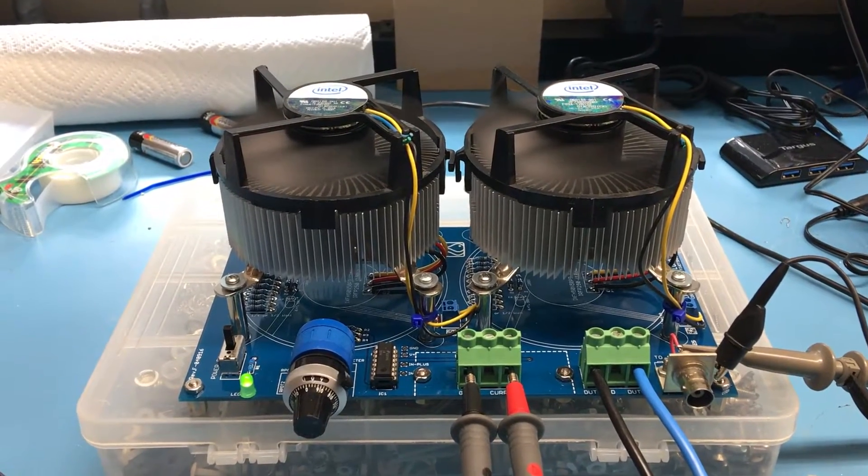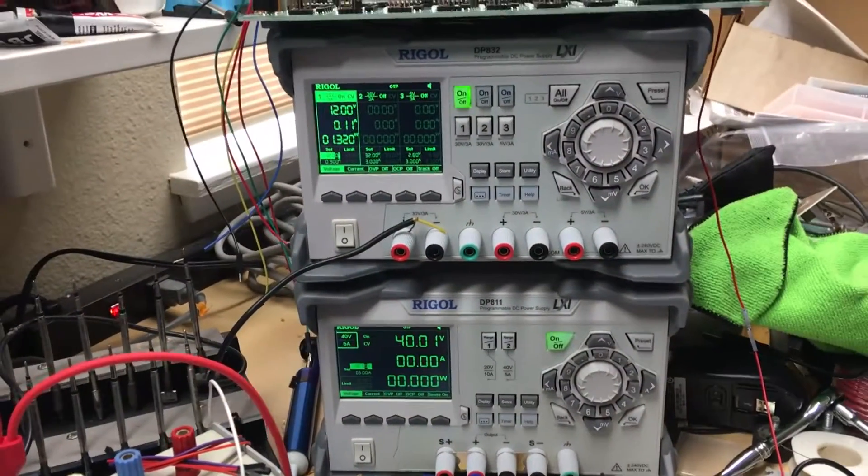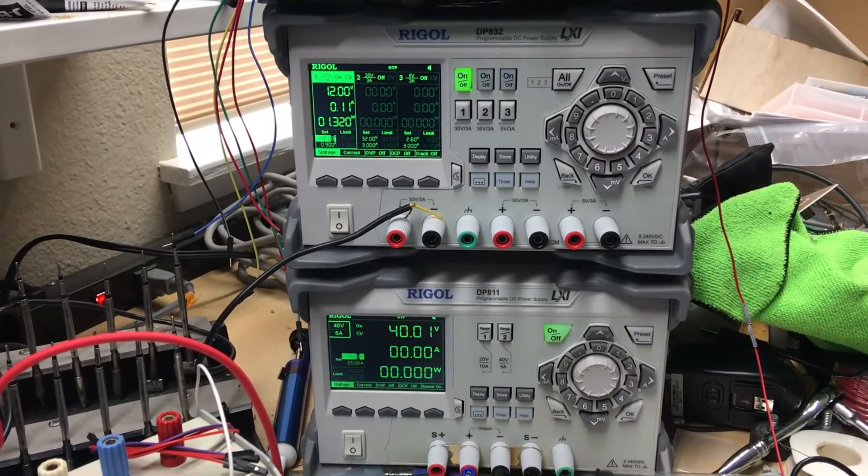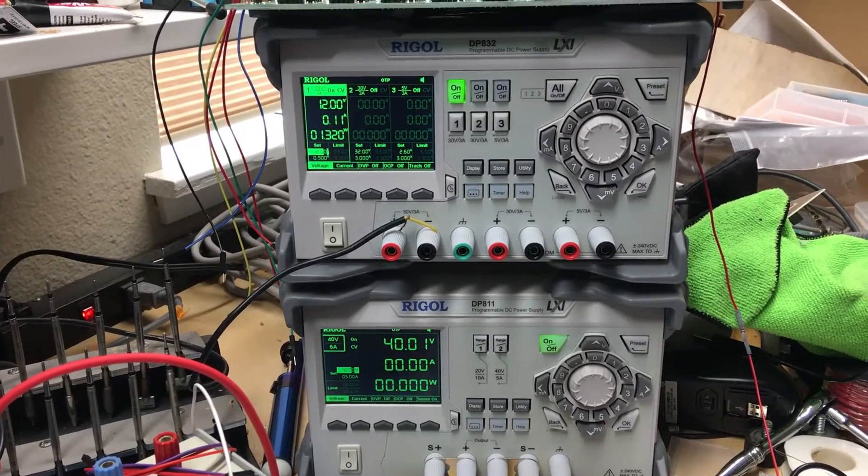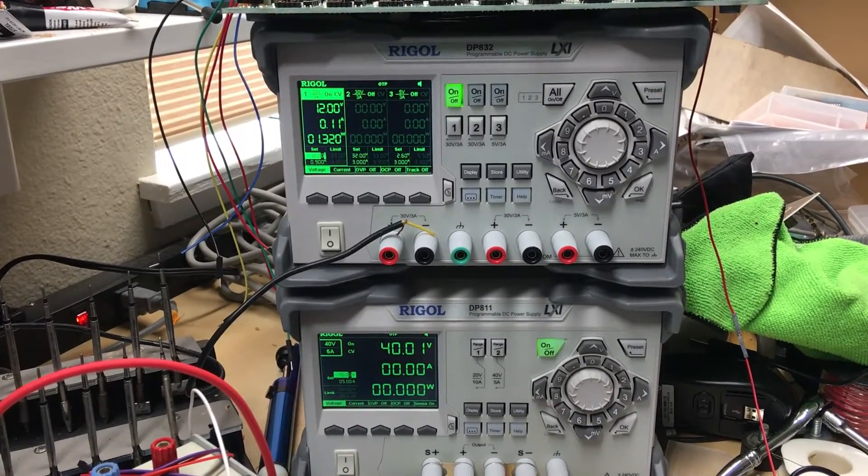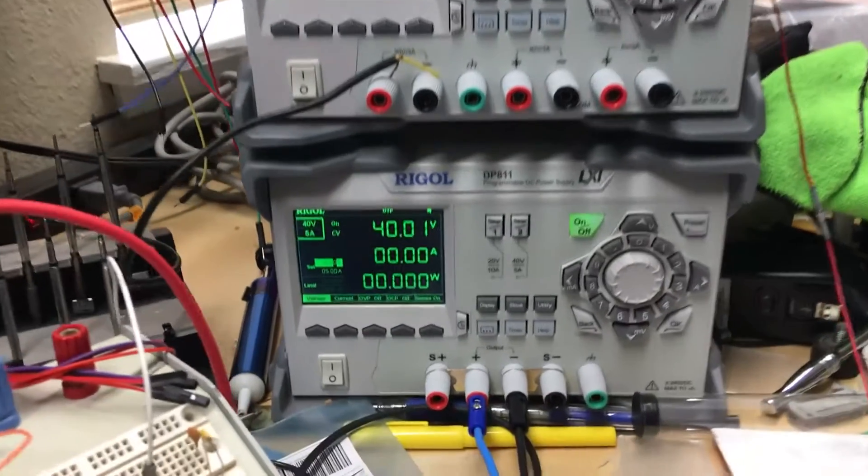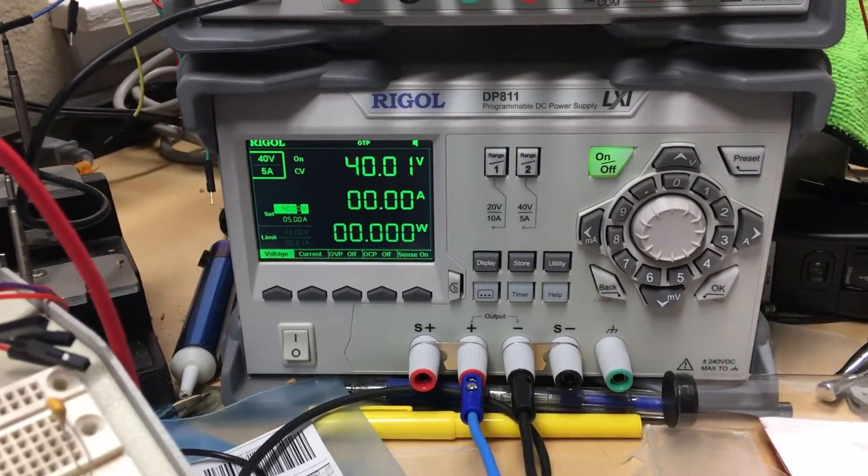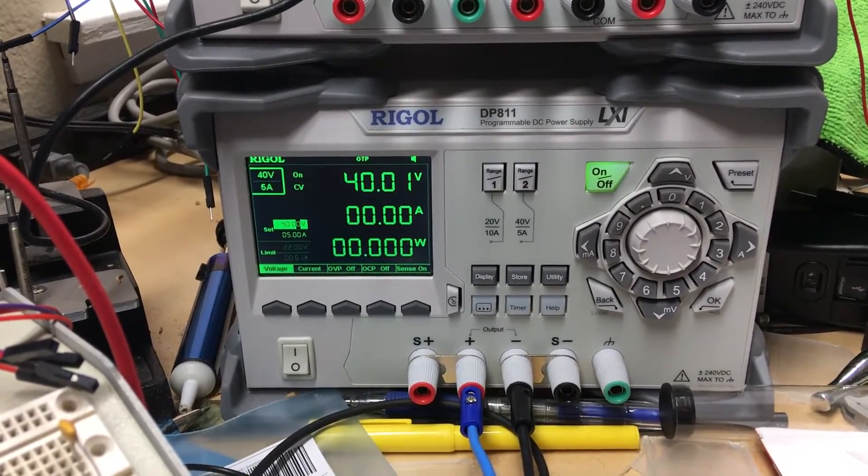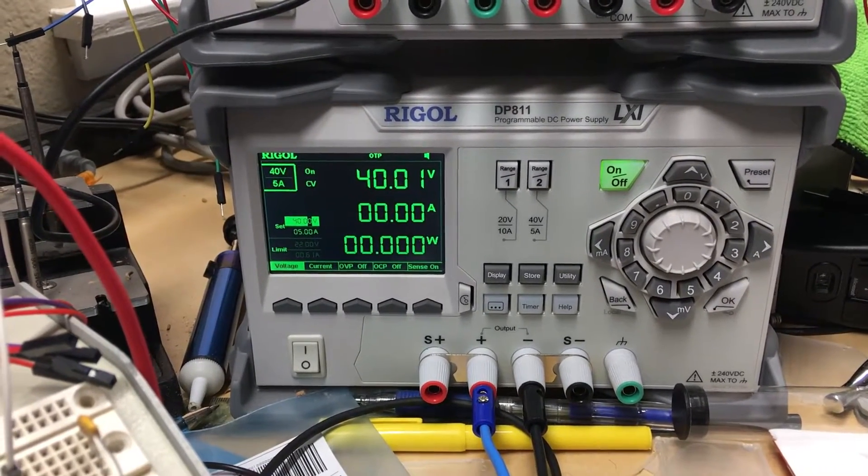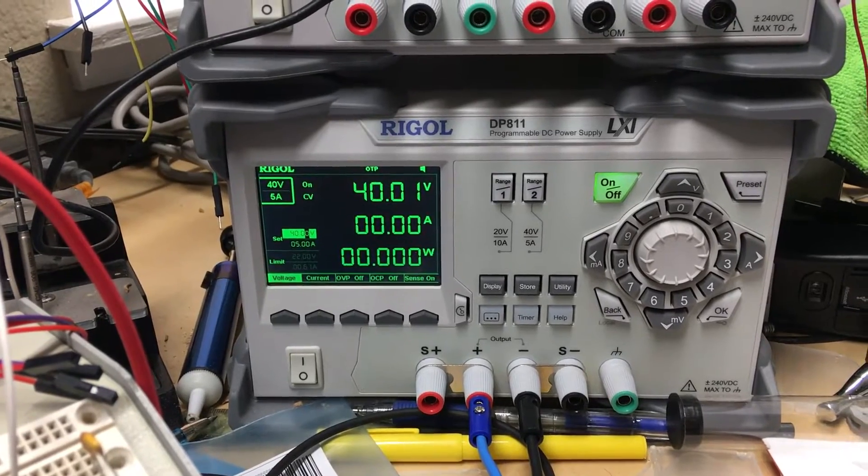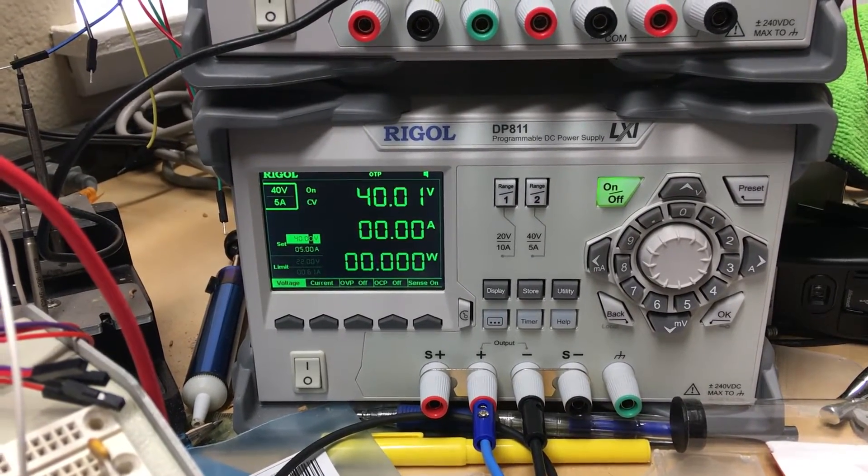I'll show you my setup. So if we pan over to the power supplies, I apologize for the mess on the bench. The upper supply is a Rigol DP832. The bottom supply is a Rigol DP811. The bottom supply is capable of 200 watts. I've currently got it set to 40 volts output with a 5 amp current limit. Although the output is on, there's no current draw this time.